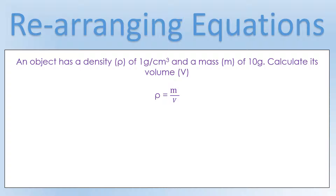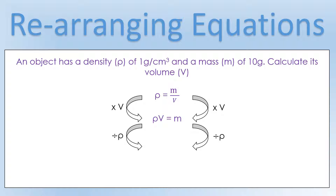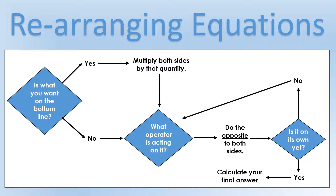Now a different equation format: density equals mass divided by volume. We have a density of 1 gram per centimeter cubed and a mass of 10 grams — calculate the volume. Is volume on the bottom line? Yes. So we multiply both sides by volume. Then, is it on its own? No — it's being multiplied by density, so we divide both sides by density. We get volume equals mass divided by density. Plugging in our values gives us 10 centimeters cubed. This process works regardless of the equation, and can be extended to squares, square roots, and more.